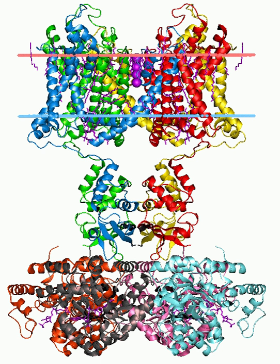Metabotropic receptors are slow response receptors in postsynaptic cells. Typically these slow responses are characterized by more elaborate intracellular changes in biochemistry. Responses of neurotransmitter uptake by metabotropic receptors can result in the activation of intracellular enzymes and cascades involving second messengers, as is the case with G protein-linked receptors. Various metabotropic receptors can include certain glutamate receptors, muscarinic acetylcholine receptors, GABA-B receptors, and receptor tyrosine kinases.